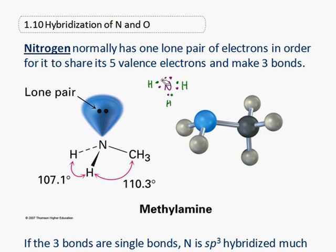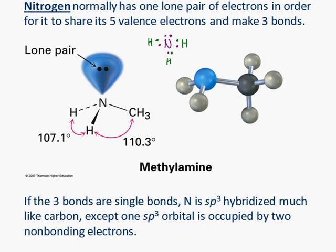So take a look at methylamine right here. The bond angles are roughly tetrahedral. So 107, 110, they're roughly similar to that 109.5 tetrahedral bond angle. The hybridization is sp3.